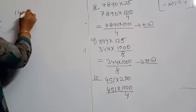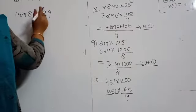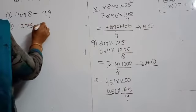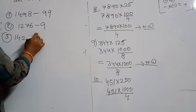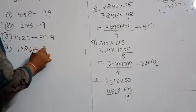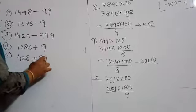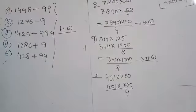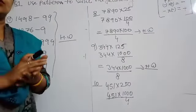Write these practice questions: First: 1498 minus 99 — write 99 as 100 minus 1. Second: 1276 minus 9. Third: 1425 minus 999. Fourth: 1486 plus 9. Fifth: 428 plus 99. These are questions outside the book and are also your homework. Do your homework in pencil so that corrections can be made if needed. That is enough for today — thank you and have a good day.